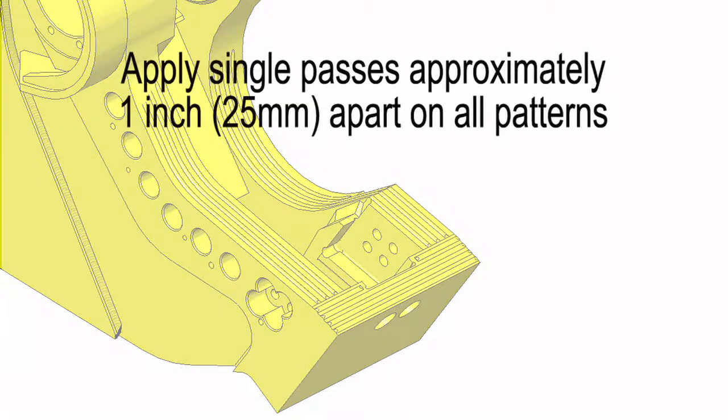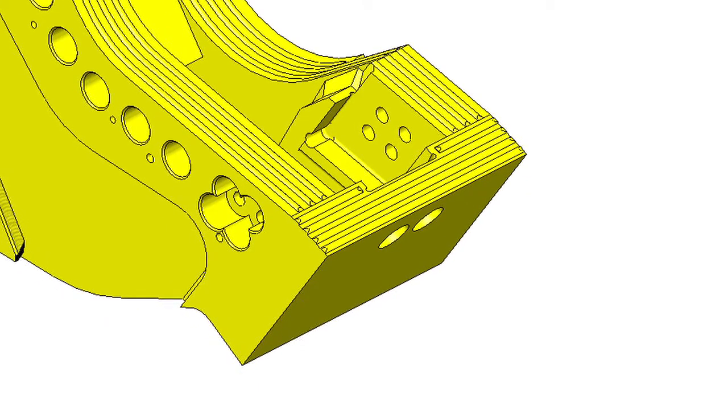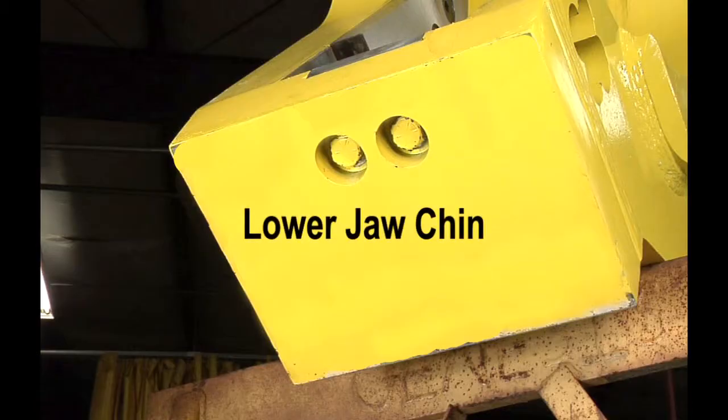Lower jaw: apply single passes approximately one inch or 25 millimeters apart, then work across the top of the chin plate and along the lower jaw toward the throat. Use two to three stringers depending on the model of the shear.